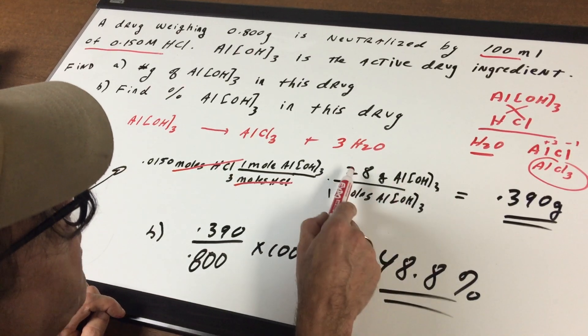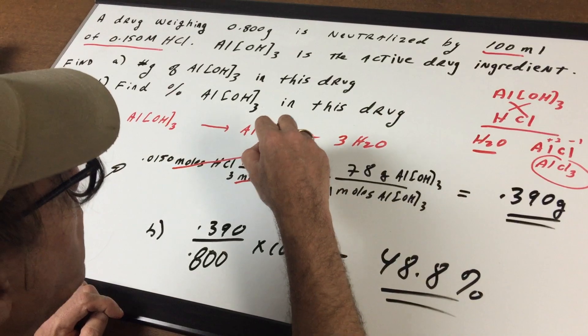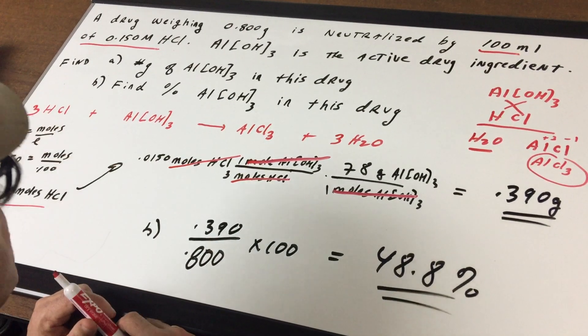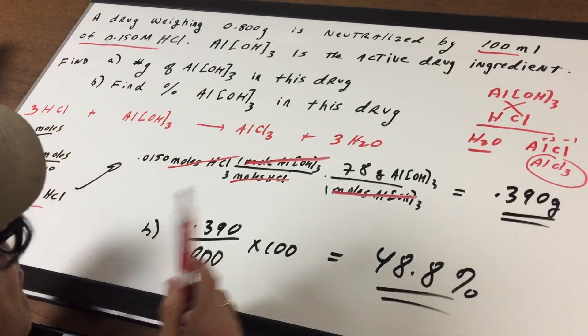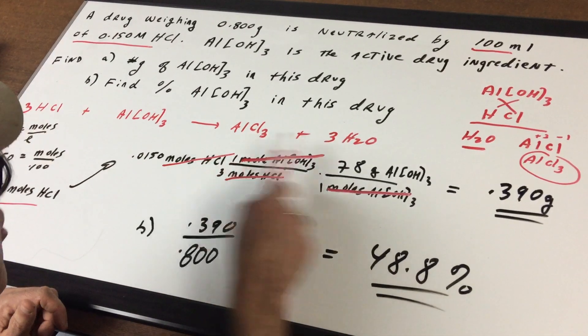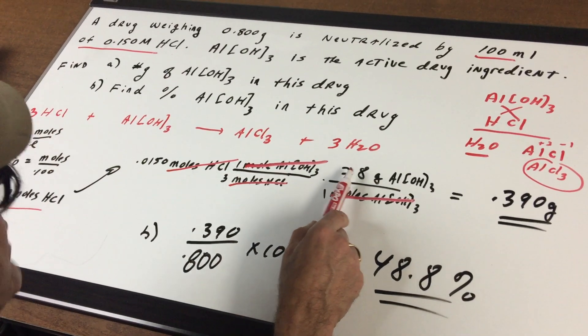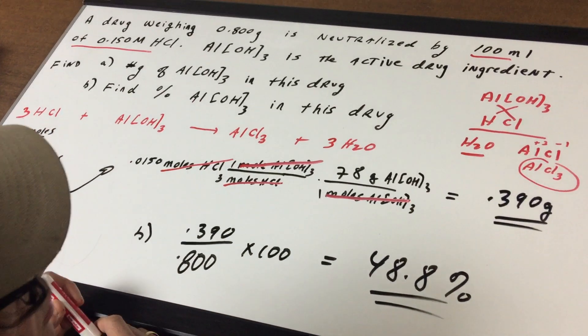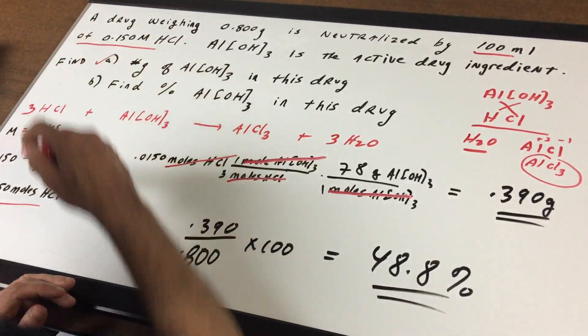There's one mole of aluminum hydroxide for three moles of HCl and the moles of HCl cancel. And then finally, you look up the weight. There's 78 grams of aluminum hydroxide in a mole. Moles cancel out. Don't worry about a calculator for the DAT. The numbers will be much nicer. But for this exam question, you could use a calculator for it. So if you hit 78 times 0.150 over 3, that gives me the number of grams of aluminum hydroxide, which is 0.390. And that's how you did part A.